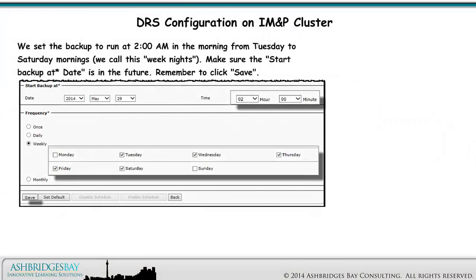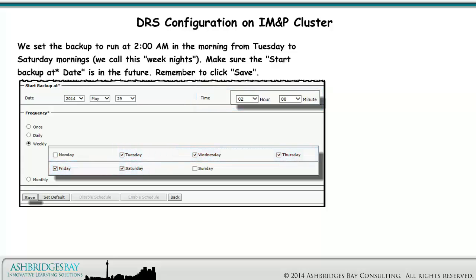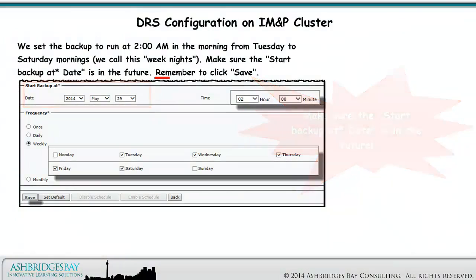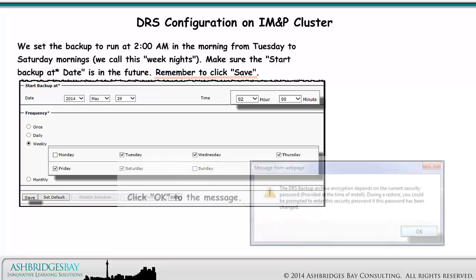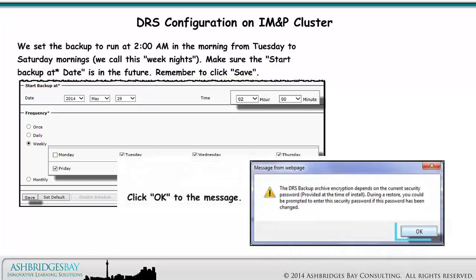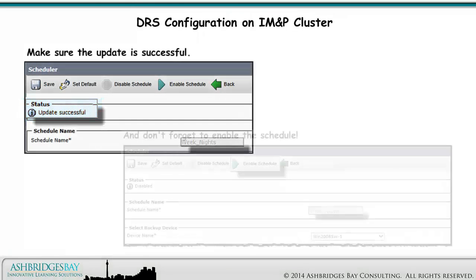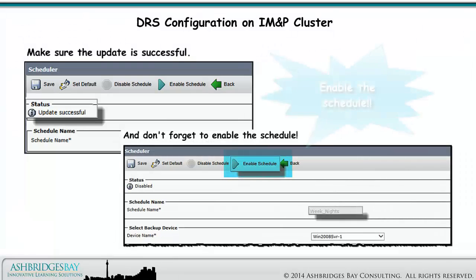We set the backup to run at 2 a.m. from Tuesday to Saturday mornings — we call this "weeknights." Make sure the Start Backup at date is in the future. Remember to click Save and click OK to the message. Make sure the update is successful, and don't forget to enable the schedule.